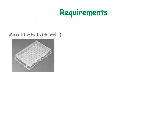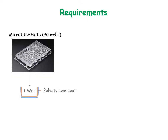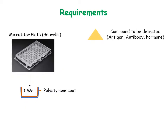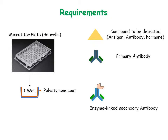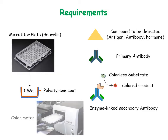For an ELISA test, we need a microtiter plate consisting of multiple wells coated with polystyrene, which facilitates the adsorption of compound to the plate. The compound to be detected may be an antigen, hormone, or antibody. We also need a primary antibody that specifically binds to the compound, and an enzyme-linked secondary antibody which is specific for the primary antibody and converts its colorless substrate to a colored product. The color produced is quantified by colorimeter, and its intensity corresponds to the amount of compound in the given sample.